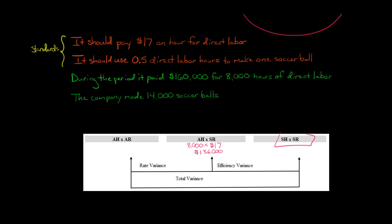Now let's do the standard hours times the standard rate. Well, we made 14,000 soccer balls. What should have been the standard amount of hours that it should have taken to make those soccer balls? Well, 14,000 soccer balls times 0.5 direct labor hours per soccer ball. So we can multiply this by 0.5, and that's going to give us 7,000.